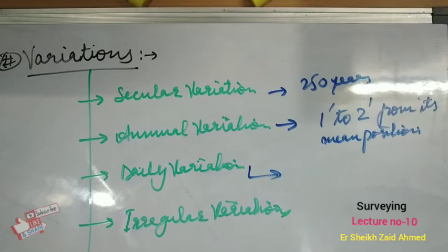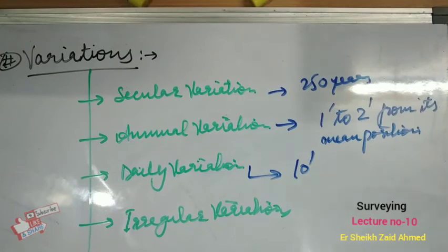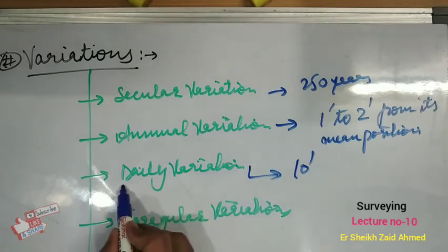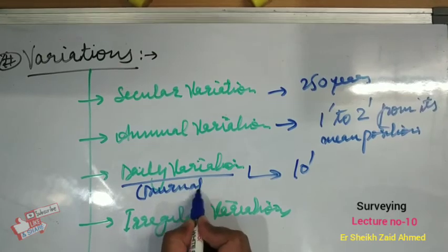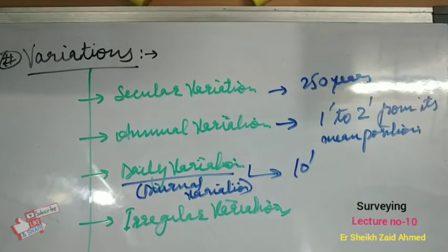The third type is daily variation, also known as diurnal variation. It is as much as 10 minutes. Daily variation is more near magnetic poles and less near the equator, more in summer and less in winter, and more during the day and less at night. The amount of variation also changes from year to year.